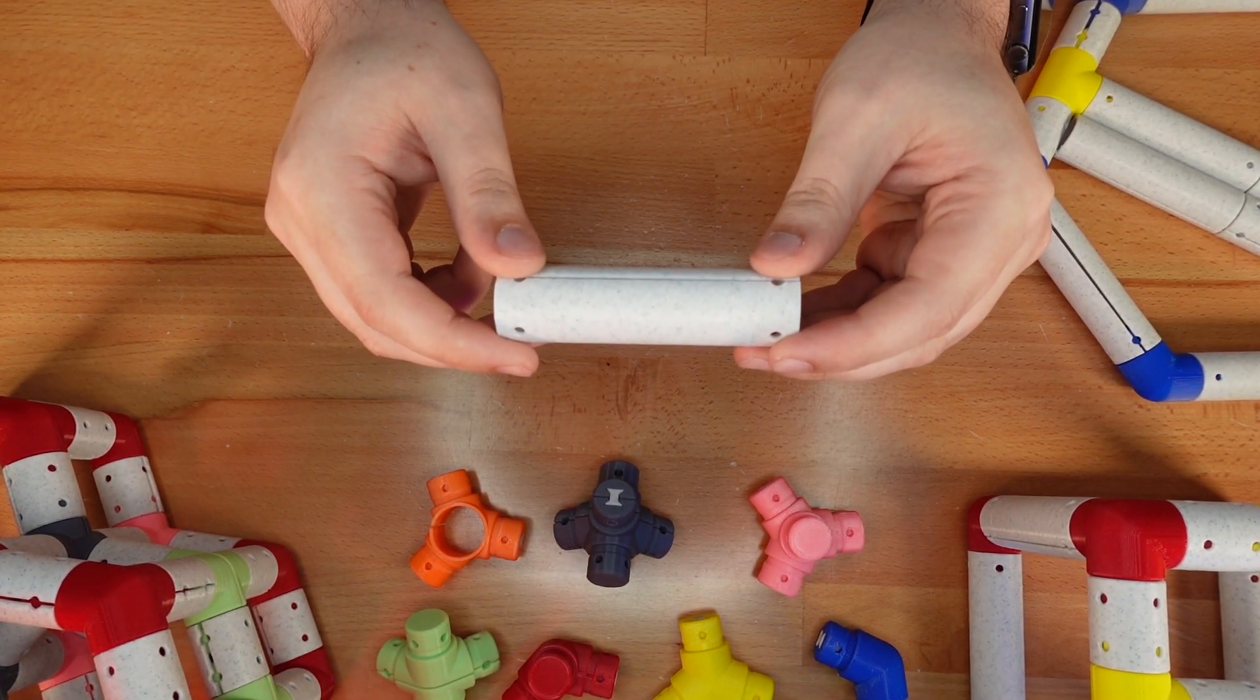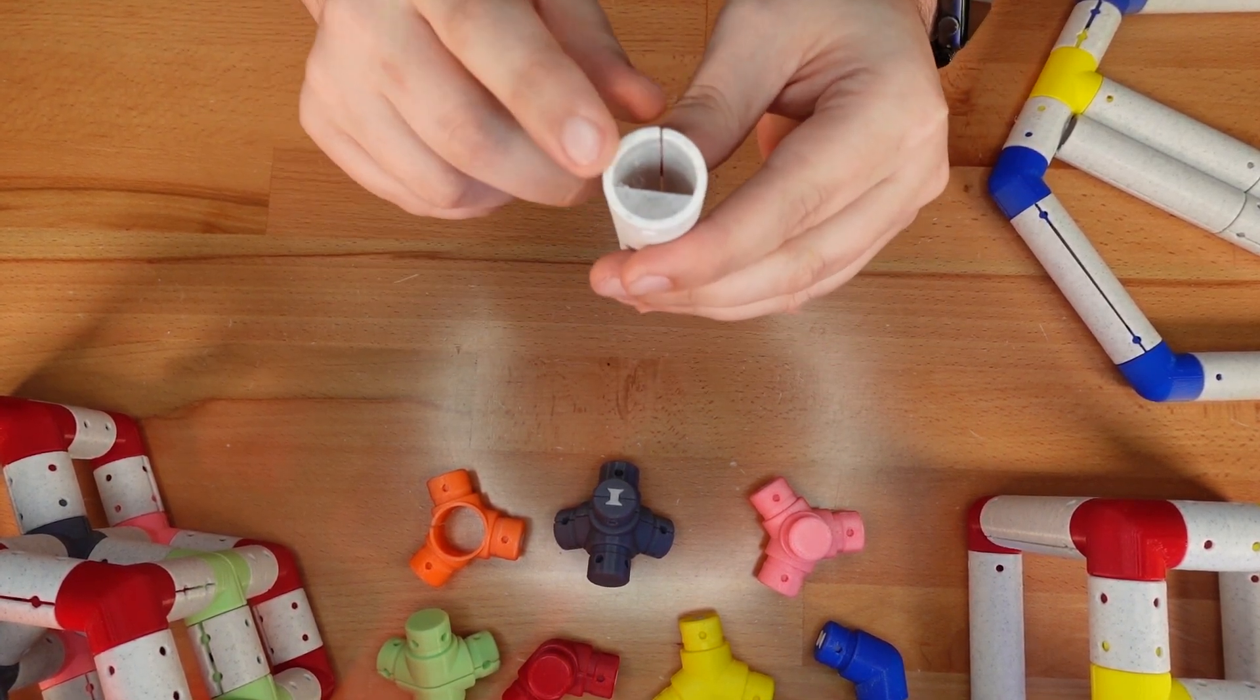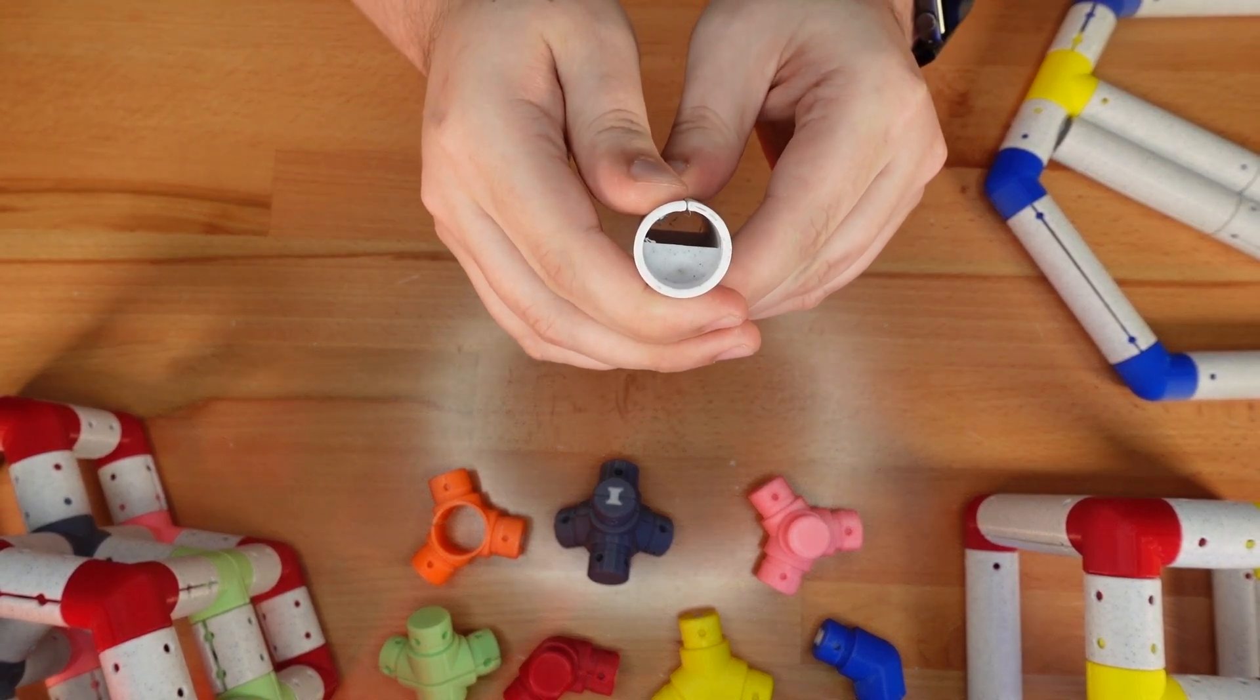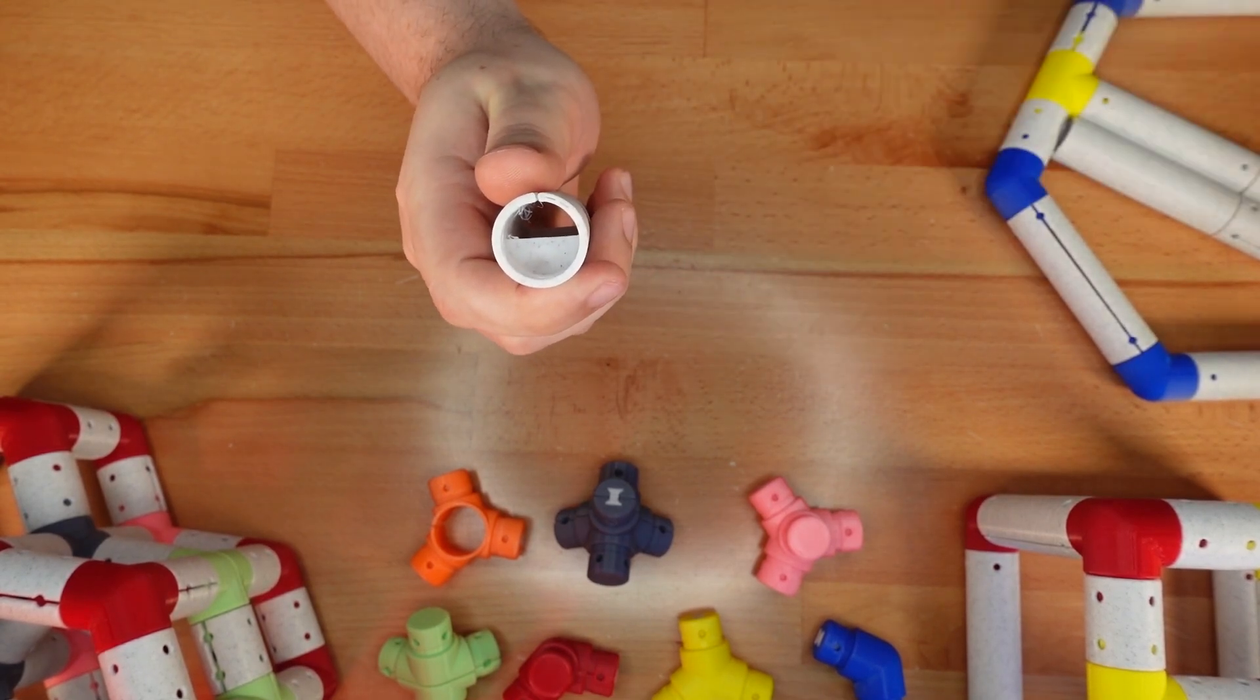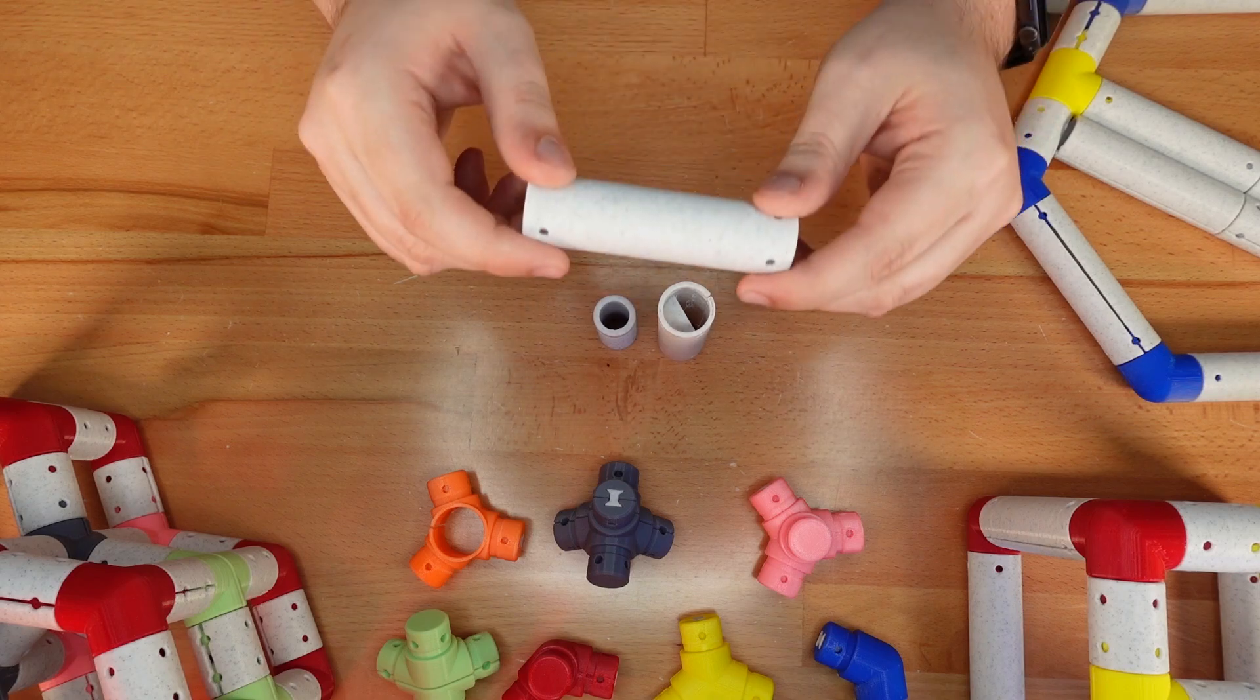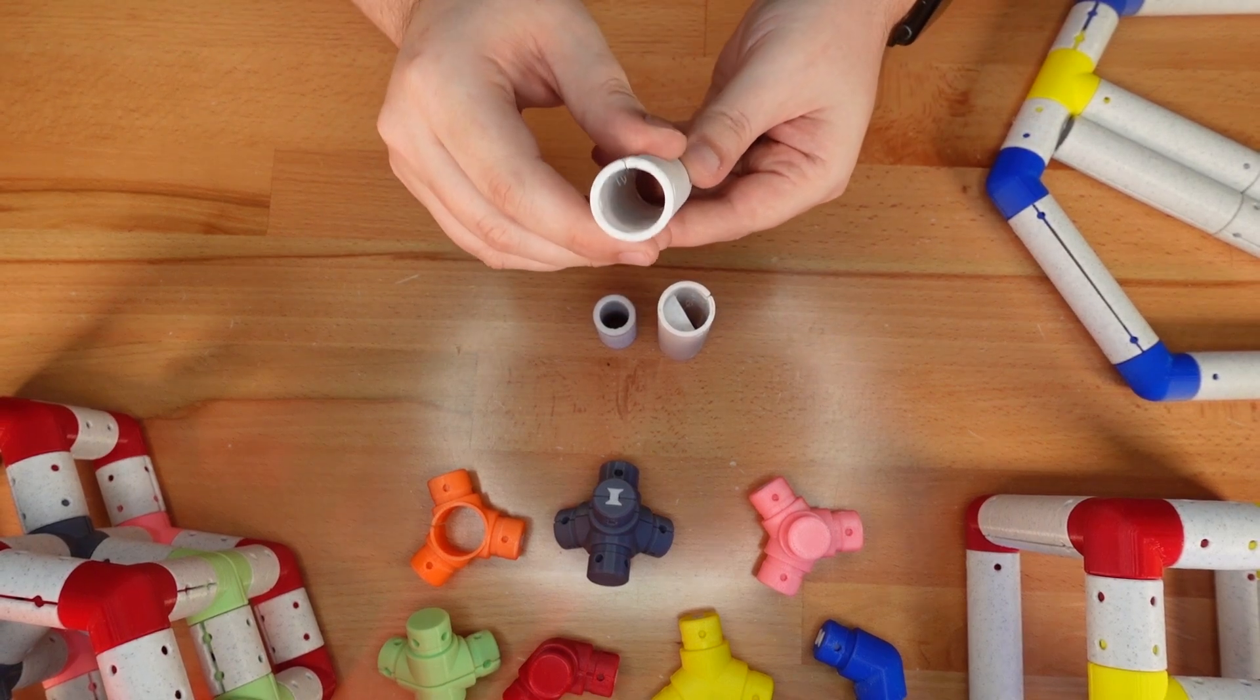If you saw the last video, you might recall that pipes have an internal rib to provide a greater clamping force. Obviously this rib is a problem if you want to use extenders. So the default pipe is now rib free.